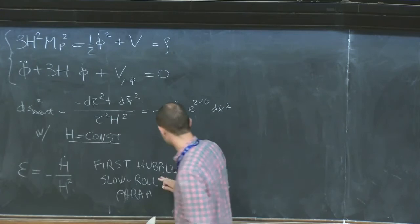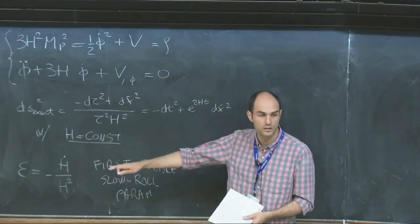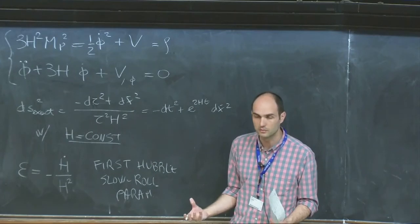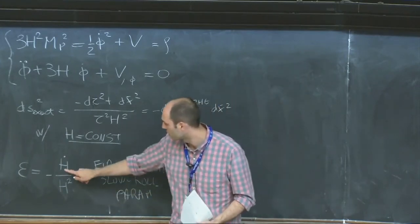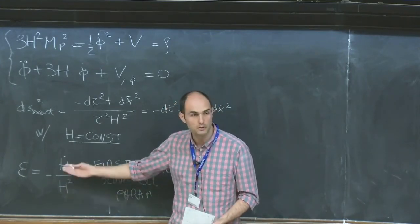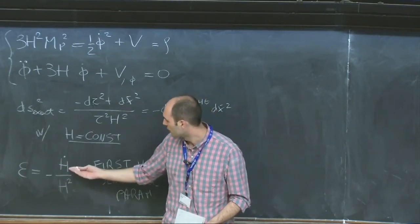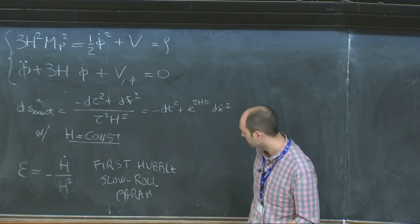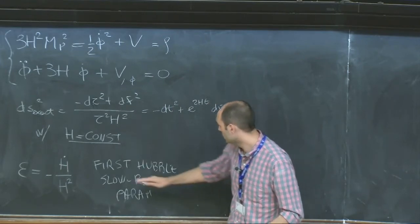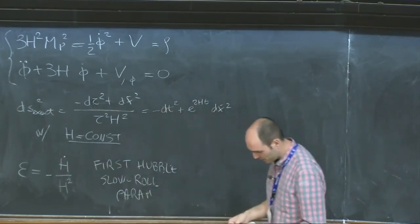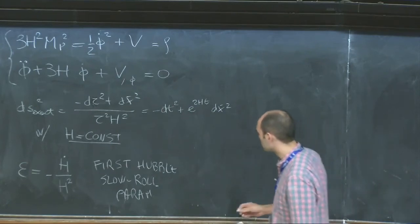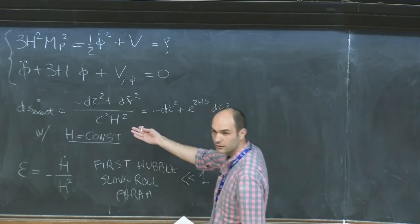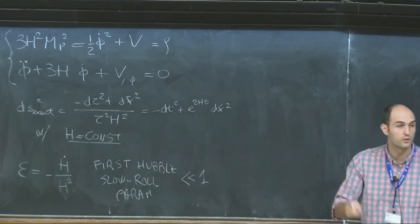The reason why it's called the Hubble parameter is obvious: this quantity doesn't know anything about what kind of matter is sourcing the expansion. It only knows about gravity, about spacetime, about geometric quantities like Hubble. It's called 'first' because there is only one derivative and it's the first one I introduced. There is some sense in which we want epsilon to be much smaller than one — to be close enough to de Sitter. That's the first condition.